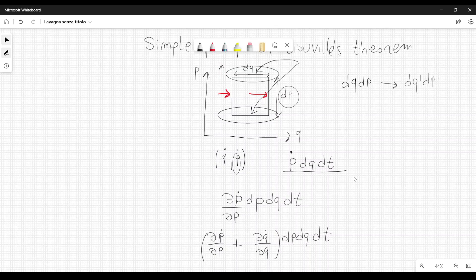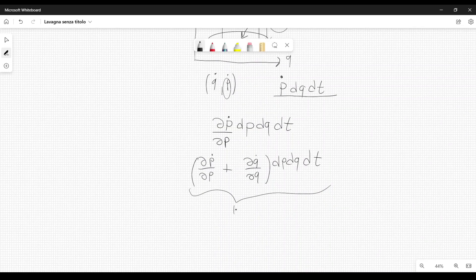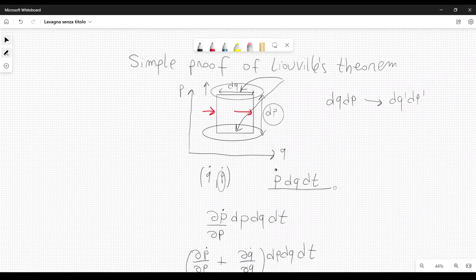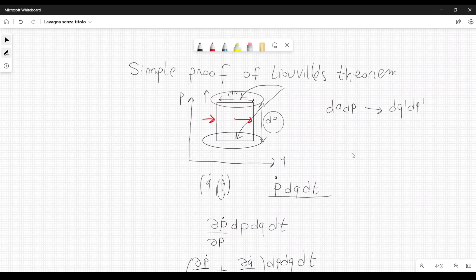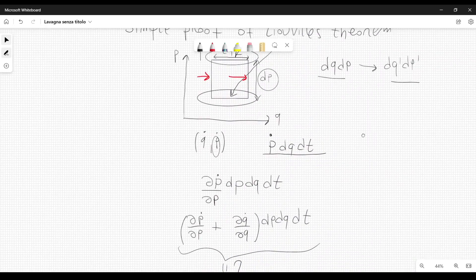This is the change in the area, in the small element dp dq. We want to show that this element, if we move its edges, will not change area. So, we want to prove basically that this change is equal to zero. We want to prove this, because if this is the case, it means that areas do not change. Therefore, we can say that if we go from one frame to another frame, dq dp will be equal to dq prime dp prime.